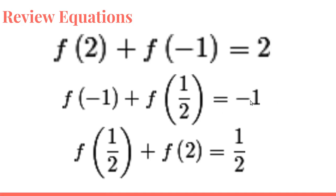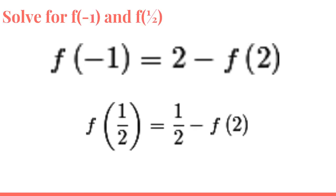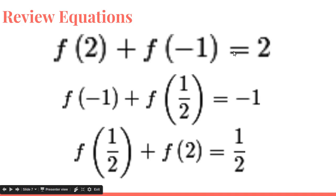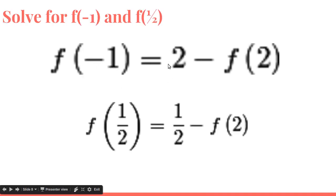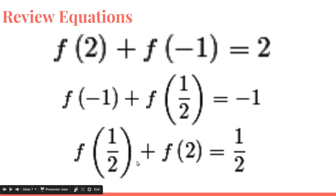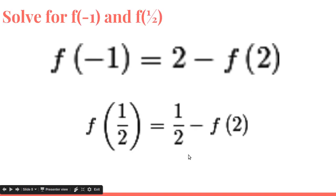So first I'm going to solve for f(-1) and f(1/2). And I've done that here. So the first equation, subtract both sides by f(2) and you get f(-1) equals 2 minus f(2). And for the third equation, you get subtract by f(2) and you get f(1/2) equals 1/2 minus f(2).